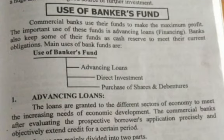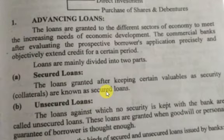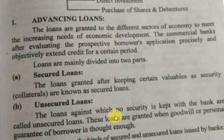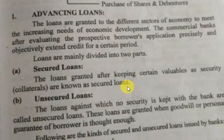Let's discuss these points in detail. Number one is advancing loans. Advancing loan kya hai — bank ke paas jo funds hote hain, jo deposits hote hain, unhe woh prime basis pe utilize karta hai loan dene ke liye. Loan ki aage bhi different types hain. Bank different types ke loans deta hai apne customers ko. Jo loan ki do main categories hoti hain woh hain secured and unsecured.